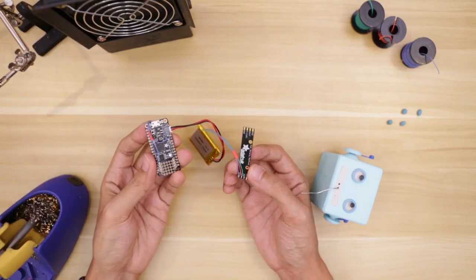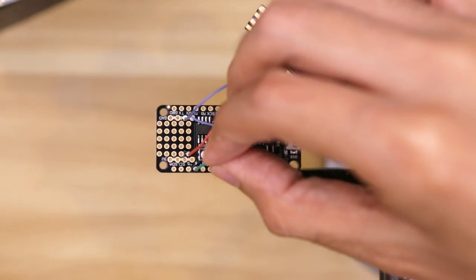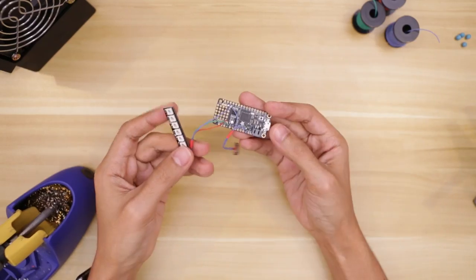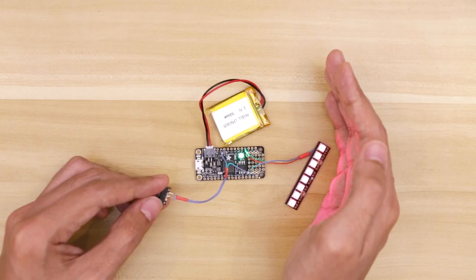Now we can connect the NeoPixel stick to the Adafruit Feather. I'll connect ground to ground, power to 3V, and data to pin number 6. That's pretty much it for all of the wiring. We can once again test out the circuit by plugging in the battery and seeing if the circuit can power on.